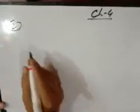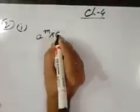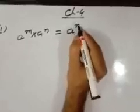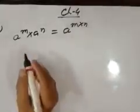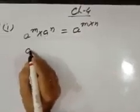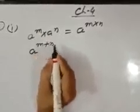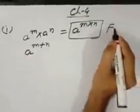Question number 2, true and false. Point number 1: if A is a rational number, then A to the power M multiplied by A to the power N equals A to the power M times N. Both bases are the same, so when the base is the same, powers are added — giving M plus N. But here it is written M times N, so it is false.